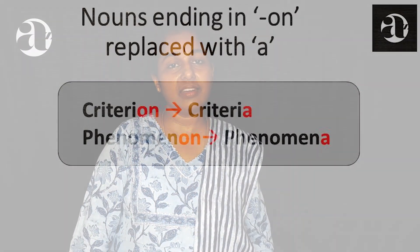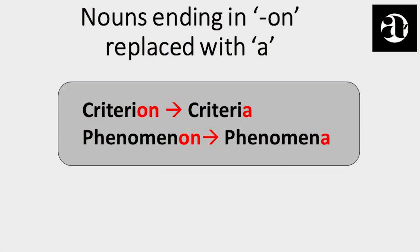Similar to nouns where we replace UM with A to form plural nouns, there are a few other nouns that end in ON which are replaced with A to form the plural noun. Criterion in singular becomes criteria in plural, where ON is replaced with A.